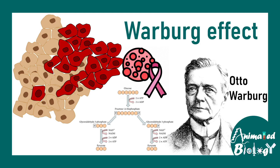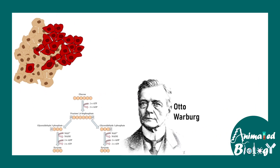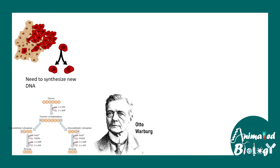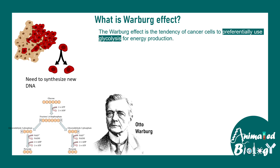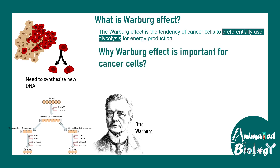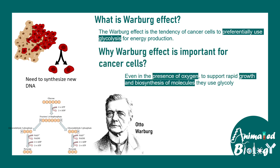In this video we'll talk about the Warburg effect. Otto Warburg noticed an interesting trend in cancer cells: cancer cells preferentially use glycolysis for their primary source of energy production, even if oxygen is present. They don't use oxidative phosphorylation for energy generation; instead they utilize glycolysis to make several intermediates that can be useful for their growth and survival.